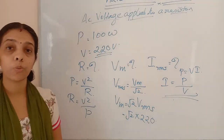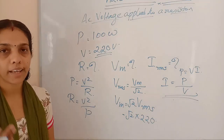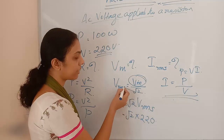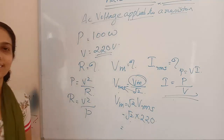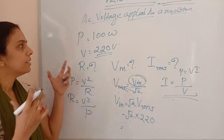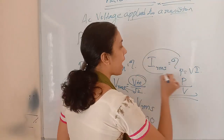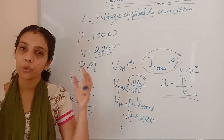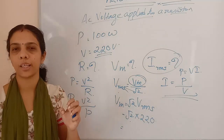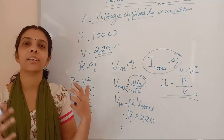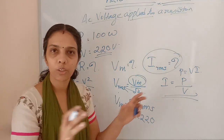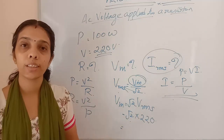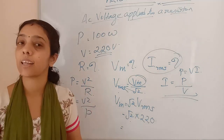The RMS value is the value we normally use for current and voltage. Whatever current or voltage we get through our household circuit — that is the RMS value, not the maximum value. So 220 V in our household circuit is the RMS value. If you need the maximum value, multiply the RMS value by √2.